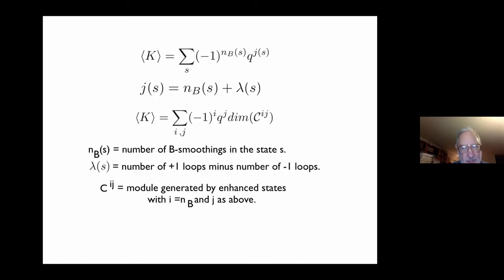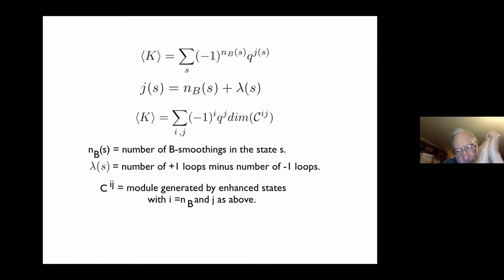I'm going to think of this in the direction of making a homology. There are going to be a certain number of states with the same I (the power of minus one) and the same J (the power of Q). Let's collect them together into a module. So C_ij is the module generated by the states whose I equals i and whose J equals j. That means in those states there will be I B smoothings, and J equals the number of B smoothings plus the number of pluses minus the number of minuses. We can write the bracket as the sum of minus one to the I times Q to the J times the dimension of C_ij.